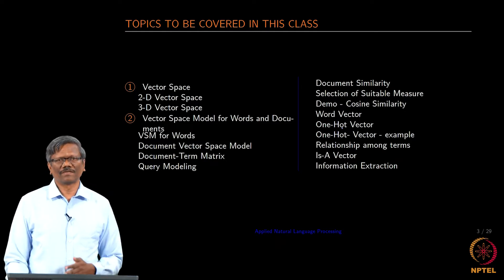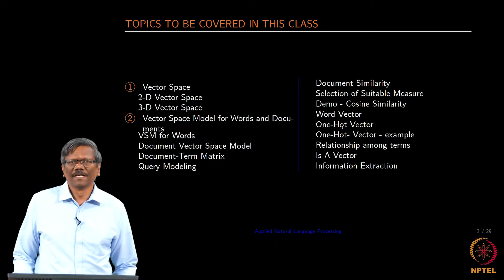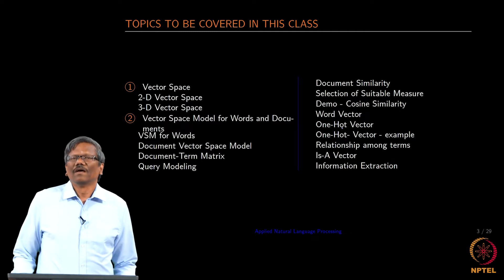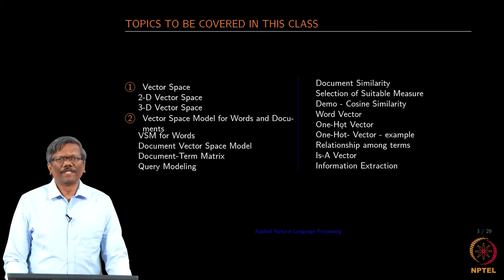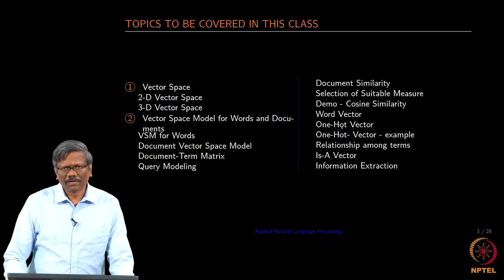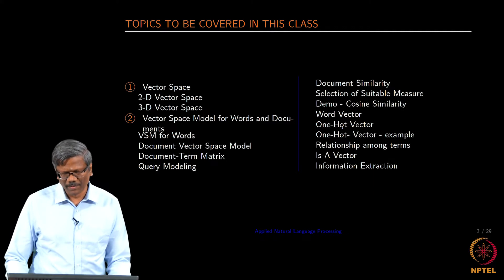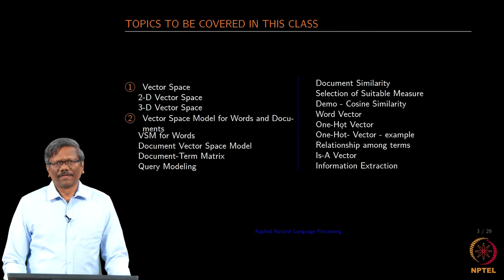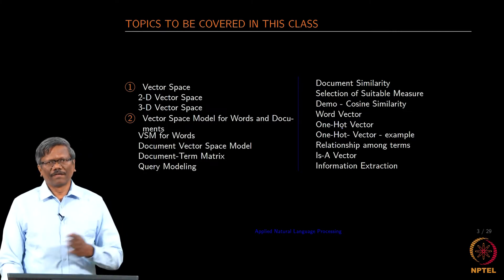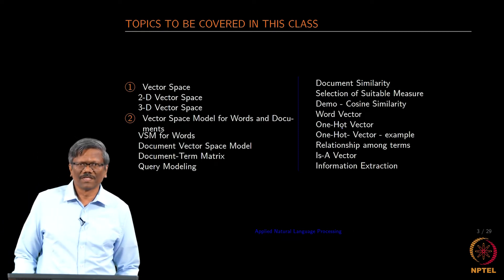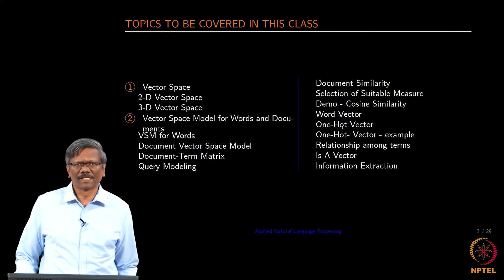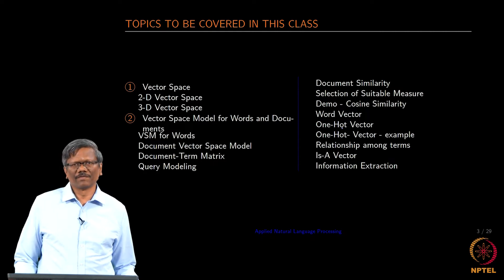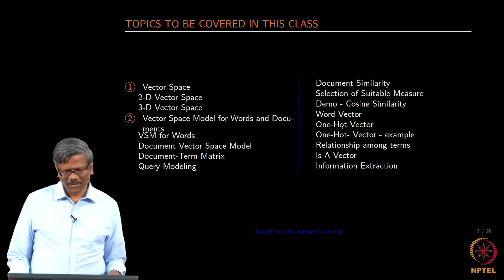We will bring in the concept of query modeling and talk about how to find out whether documents are similar. If you have multiple documents in a given corpus, you want to find the closeness of one document to another. We have some measures that we will introduce, and we will mention what could be a suitable measure for document similarity. We will look at a demo on cosine similarity, then introduce what a word vector really is and represent them in terms of one-hot vectors. Later we will bring in the concept of how to represent relationships among terms, and finally show one example of its usefulness in named entity extraction.